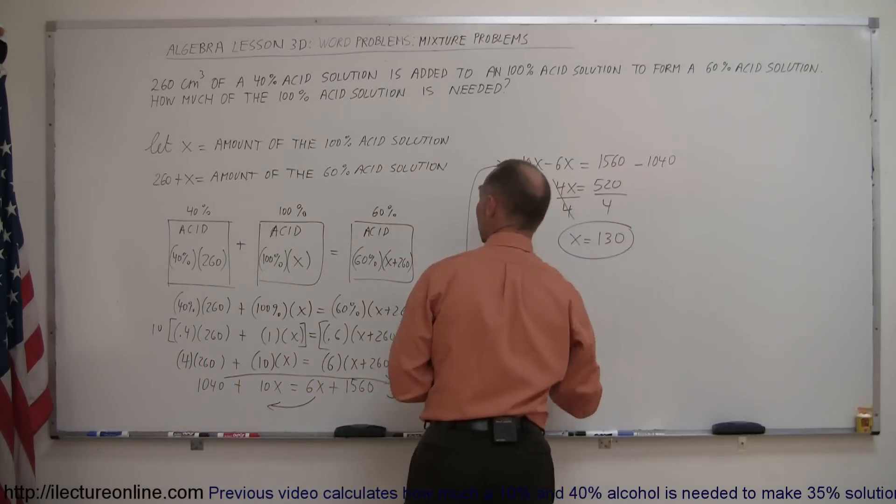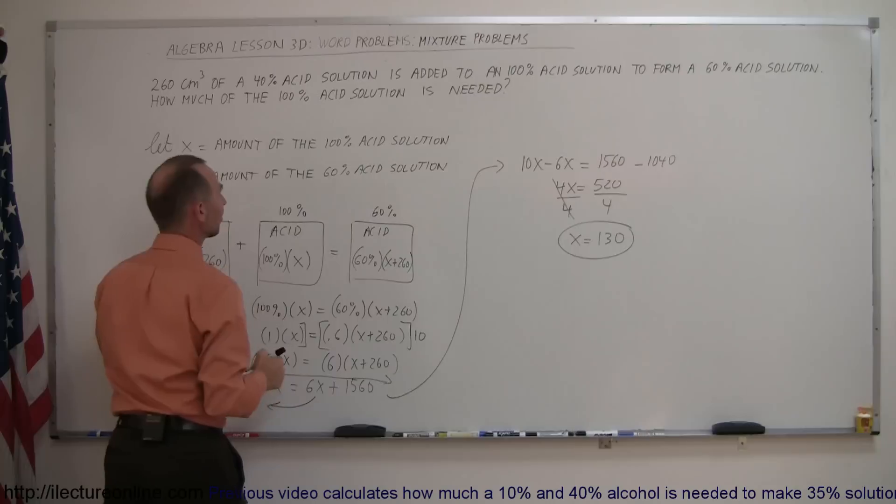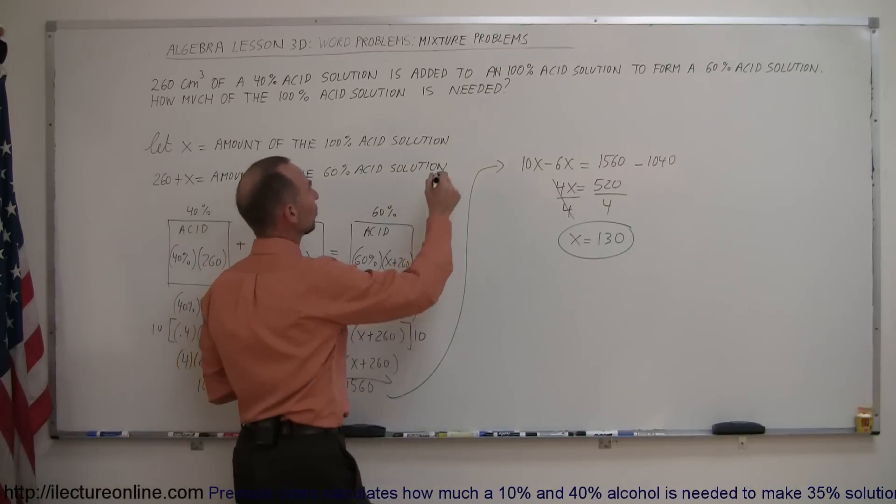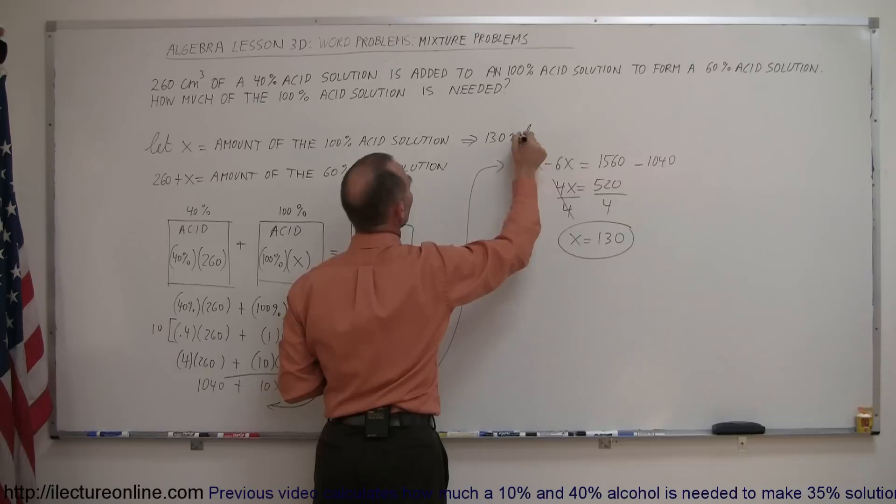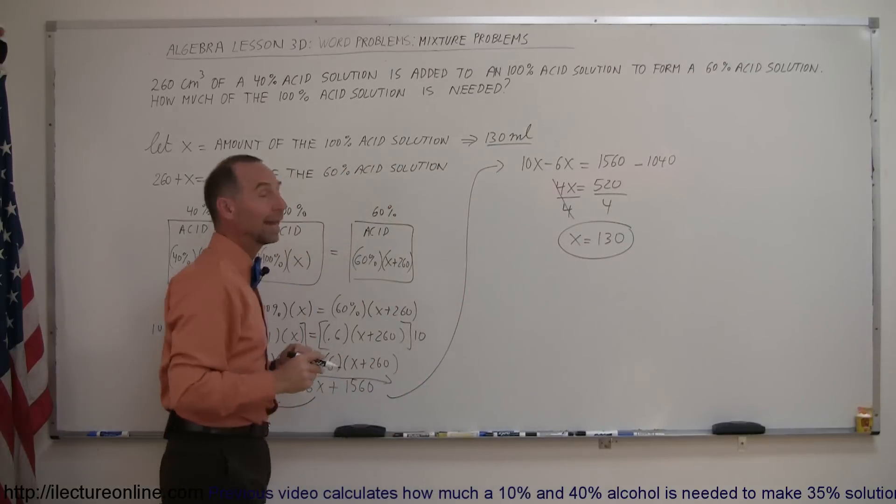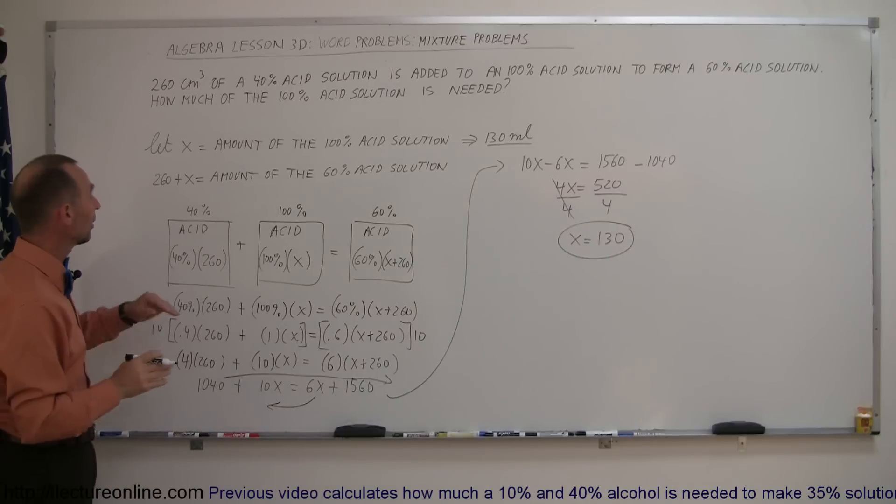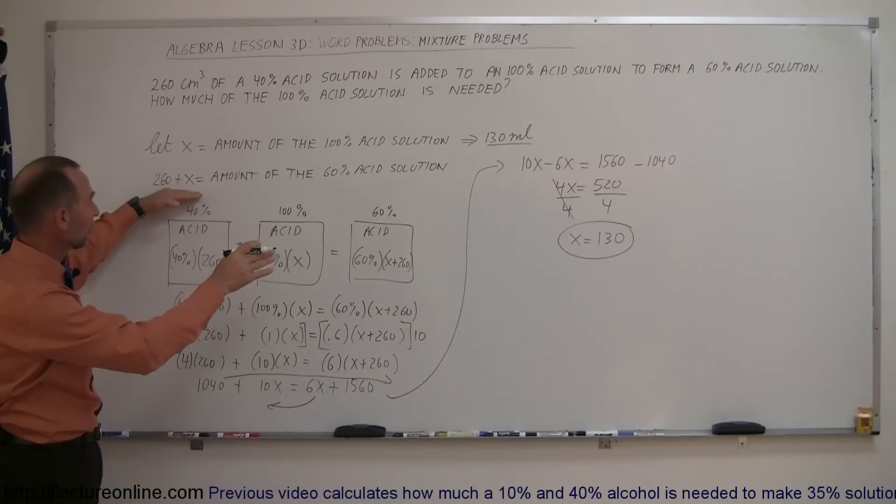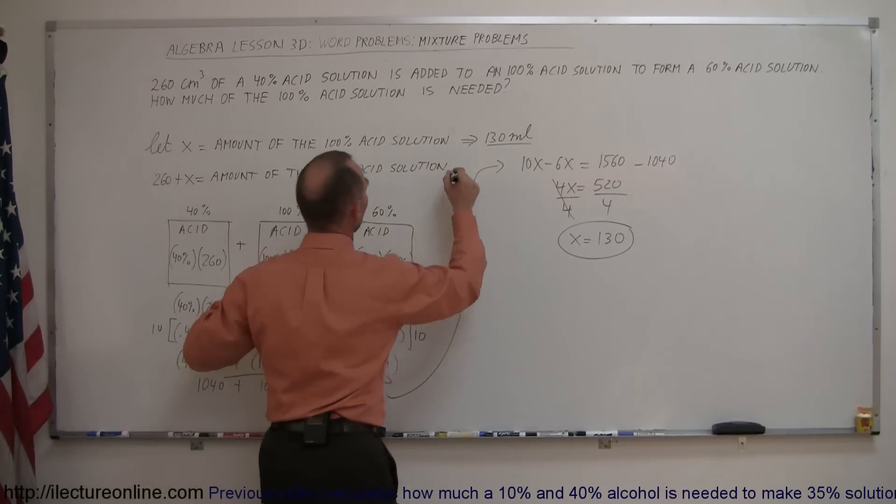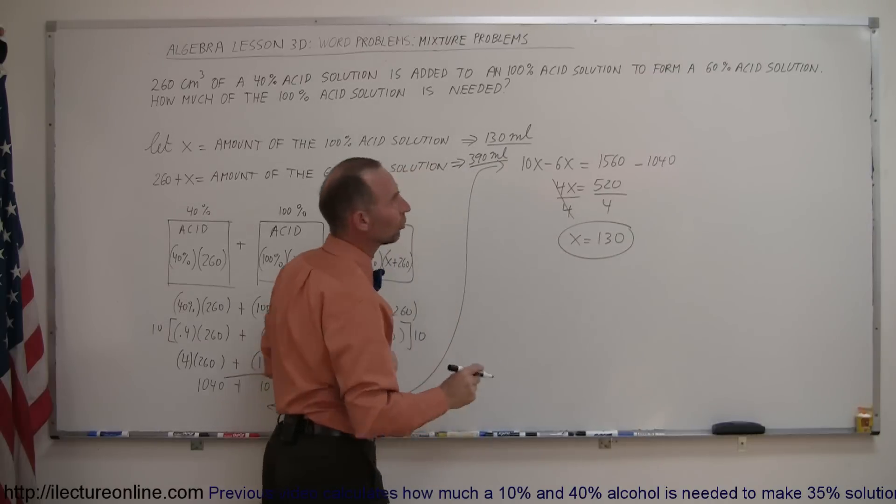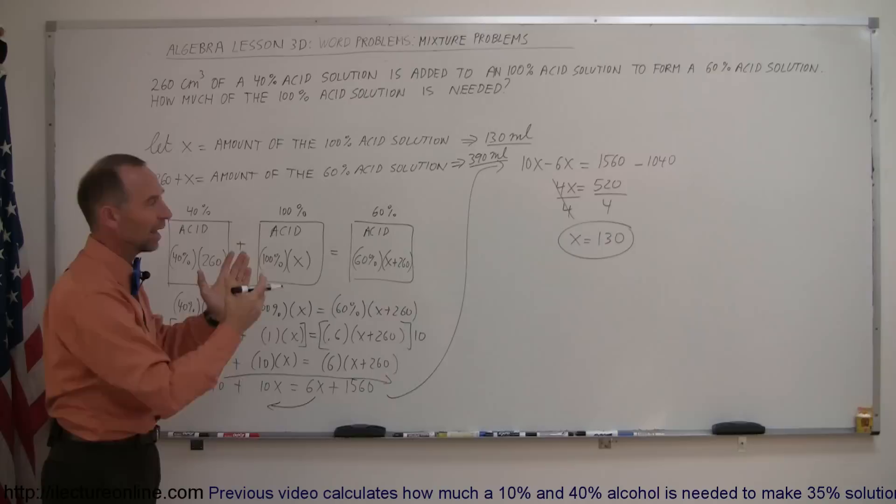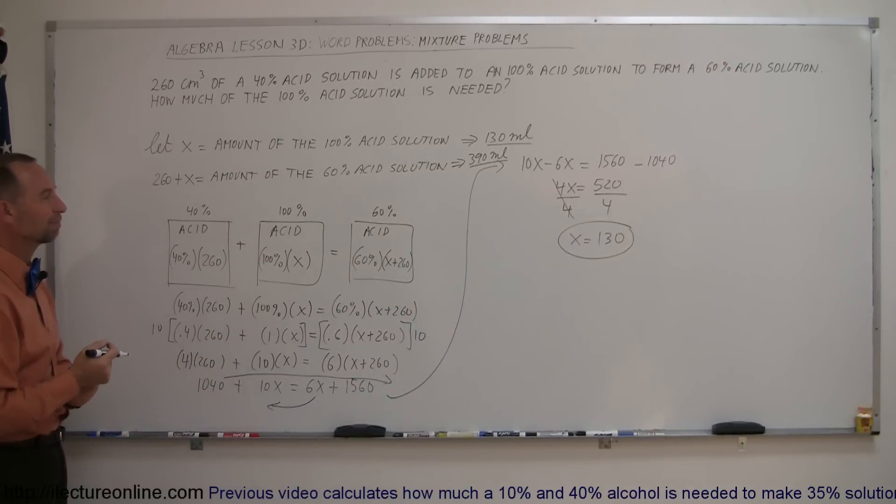Which means, by definition, since X was the amount of the 100% acid solution we needed, that means we need 130 milliliters of the 100% solution. And how much solution do we finally end up with? Well, 260 plus the 130, that means we end up with a total of 390 milliliters of the final 60% solution. They didn't specifically ask for that, but we just added it right here. And that's how you do this mixture problem.